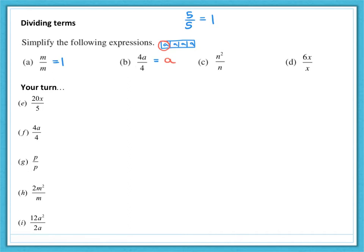What about part C? N squared divided by N. Well, N squared is N times N, and you're then dividing by N. It takes you back to an answer of N. And the last example, 6X divided by X. Well, 6X is 6 times X, and then you're dividing by X. Well, it takes you back to an answer of 6.